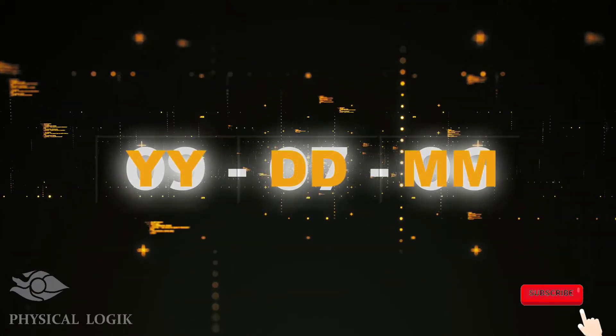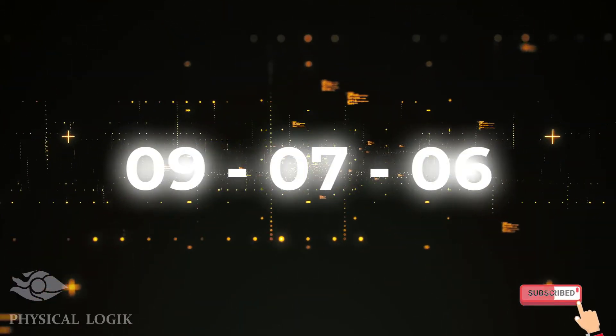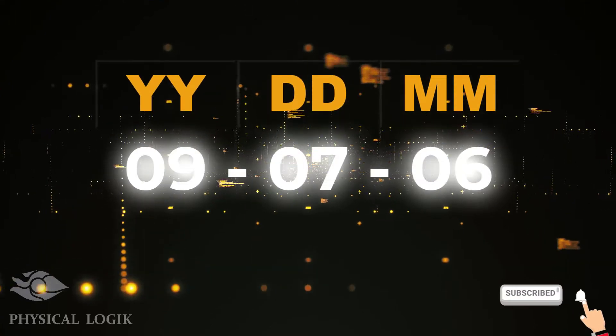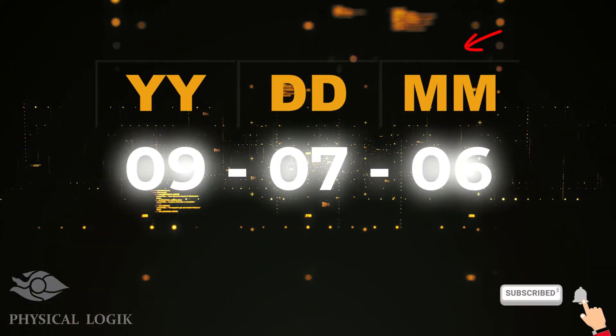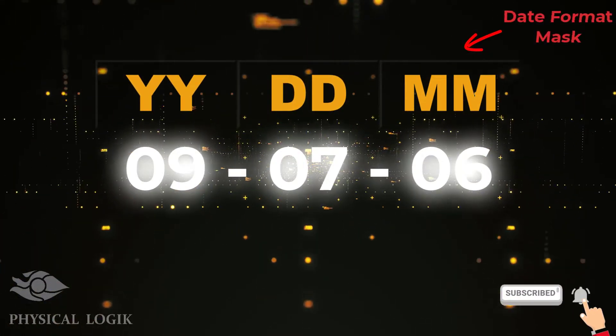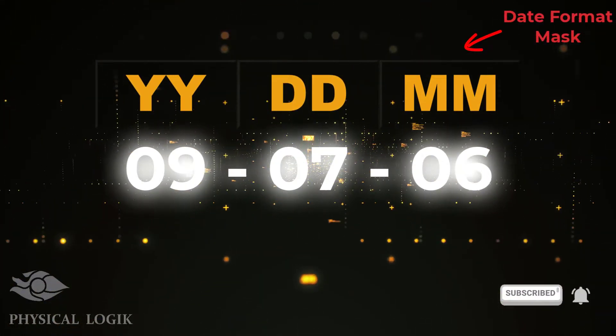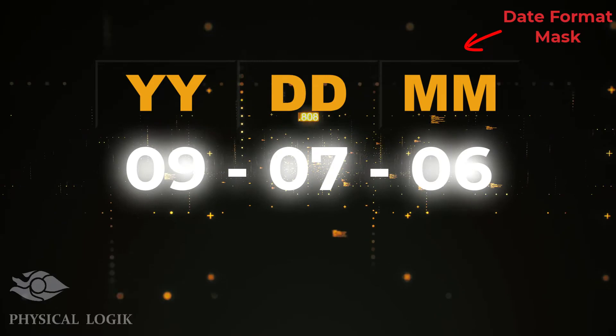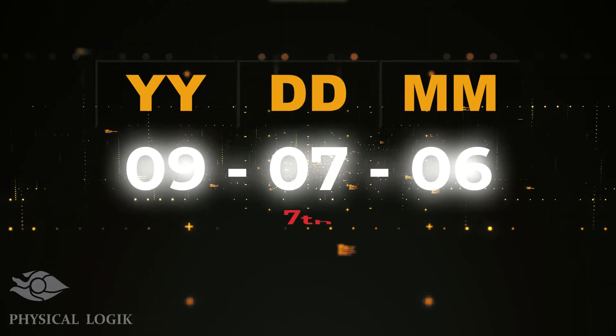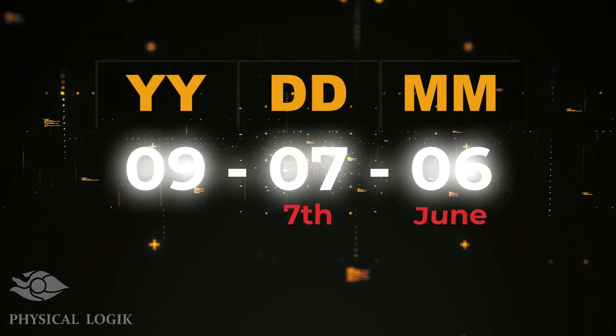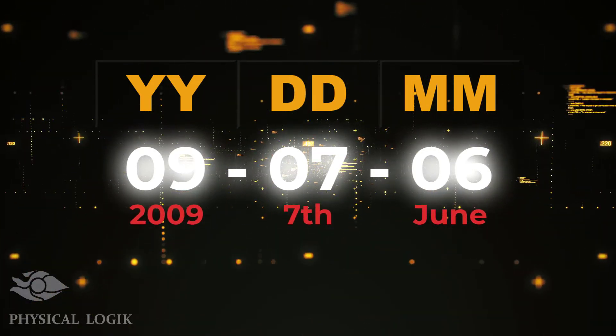The format we need to interpret this date is called a Date Format Mask, since it reveals details such as the actual positions of day, month and year.